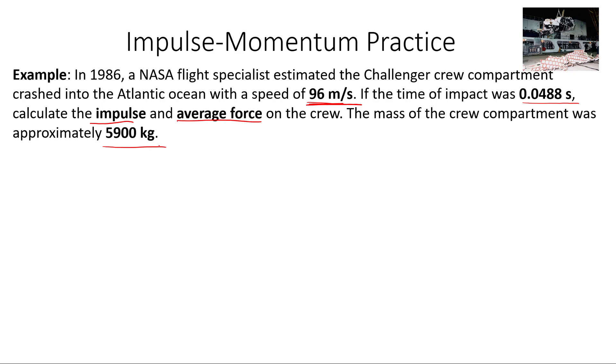So I'm going to just write out our givens. We hit the ocean with a speed of, which I'm going to call U. Our impact speed is 96 meters per second. The ship is going to crash into the ocean and slow down. Our final speed is then just going to be 0 meters per second.